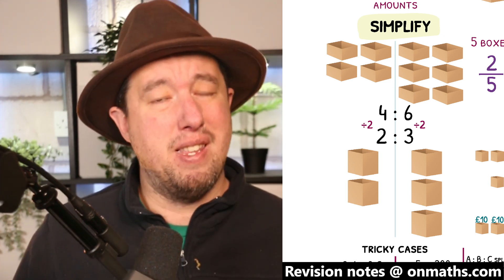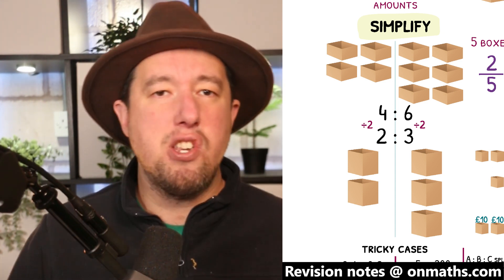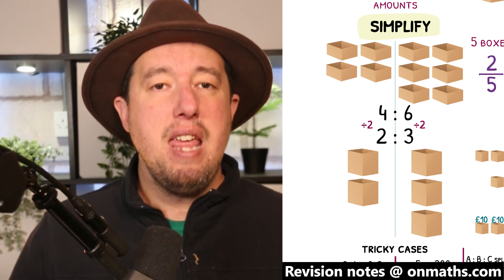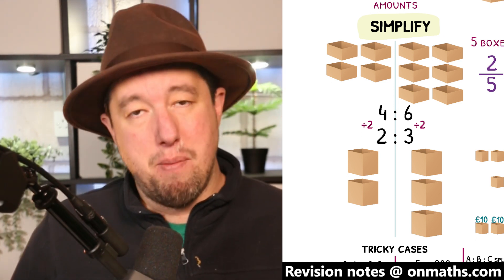Simplifying a ratio is very similar to simplifying a fraction. You are looking to keep dividing each side of the ratio until you cannot go any further. In the ratio 20 to 30, we can divide both sides by 10 to make 2 to 3.